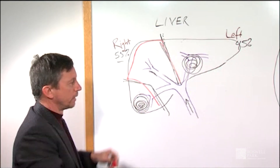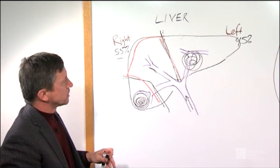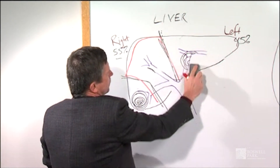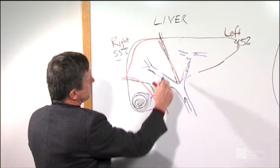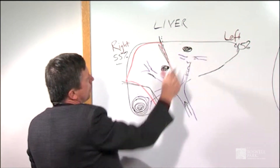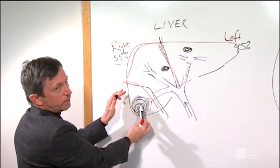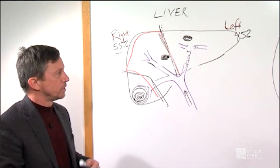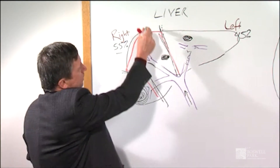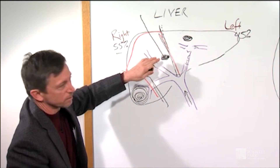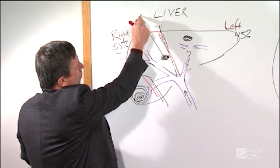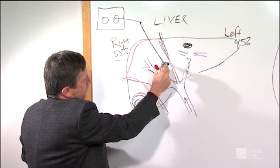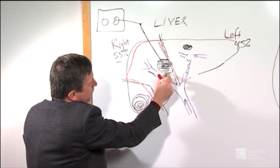In certain cases where we can't perform liver resection, we also have the ability to do a combination of treatments — for example, removing a larger tumor and for smaller tumors doing something called microwave ablation or radiofrequency ablation, where you can actually put a needle into the tumor right through the liver surface. This can be done laparoscopically or under direct vision, and the probe is hooked up to a microwave generator.